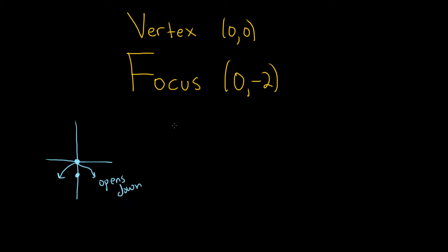So for a parabola that opens up or down, the formula is the following. It's x minus h quantity squared equals 4c times y minus k. So now we can plug in certain things. For example, h and k would be our 0 and our 0. So this would be x squared equals 4c times y.